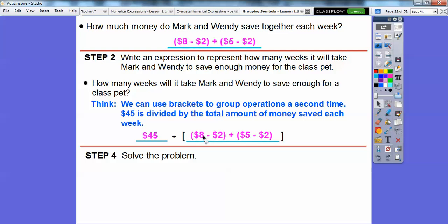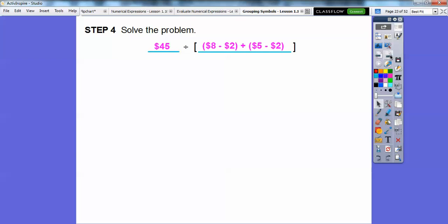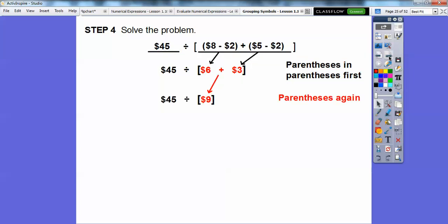So let's go ahead and solve the problem here. Let's do the brackets inside the parentheses inside the brackets here. This is 6 and this is 3. We'll do 6 and 3 first. And then we'll do these brackets right here. So we'll do these parentheses 6 plus 3, which is going to give us 9 right there. And then we can do 45 divided by 9 is 5. So let's answer the question. It's going to take 5 weeks for Mark and Wendy to save to get that class pet.